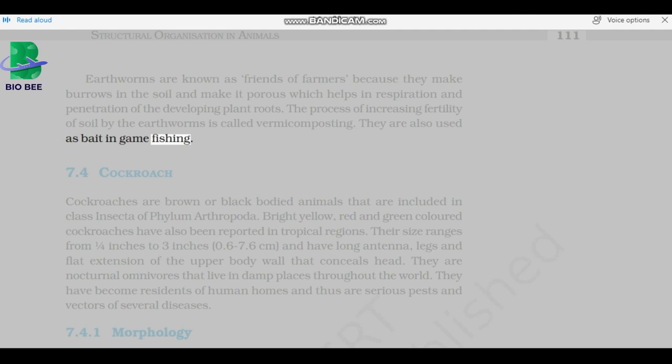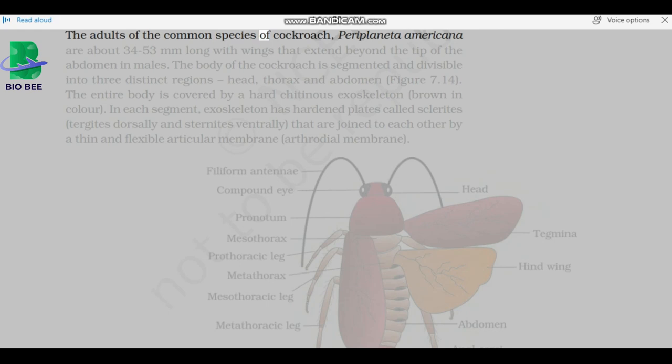Cockroach: Cockroaches are brown or black-bodied animals that are included in class Insecta of phylum Arthropoda. Bright yellow, red and green-colored cockroaches have also been reported in tropical regions. Their size ranges from a quarter inch to three inches and have long antennae, legs and flat extension of the upper body wall that conceals head. They are nocturnal omnivores that live in damp places throughout the world. They have become residents of human homes and thus are serious pests and vectors of several diseases.